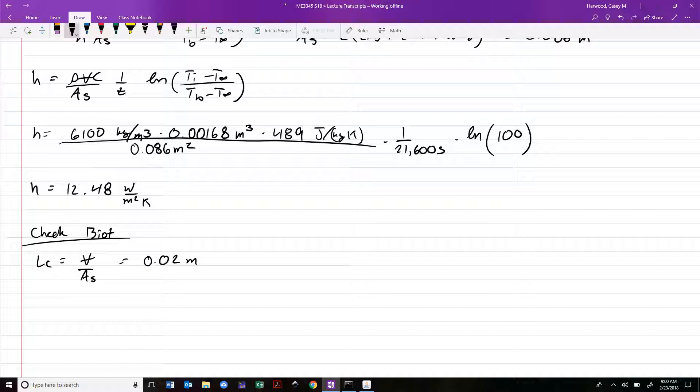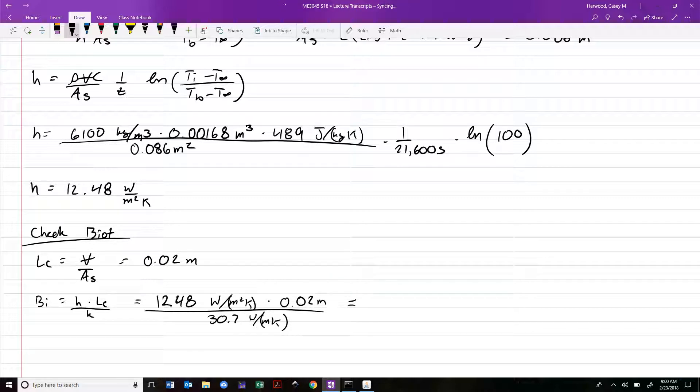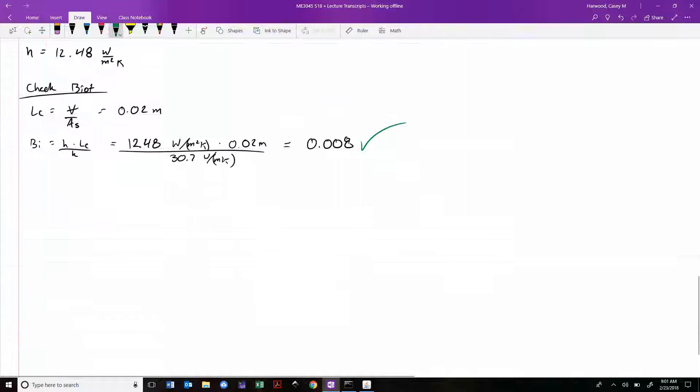So Biot number H times LC over K works out to 12.48 watts per meter squared Kelvin times 0.02 meters divided by 30.7 watts per meter Kelvin. We can see by inspection that the meters and meter squared in the denominator cancel, and the watts per meter Kelvin cancel. We'll end up with a dimensionless number of 0.008, which passes our test for being smaller than 0.1. We solved the solution tentatively, went back, and used our solution to validate the analysis we used.